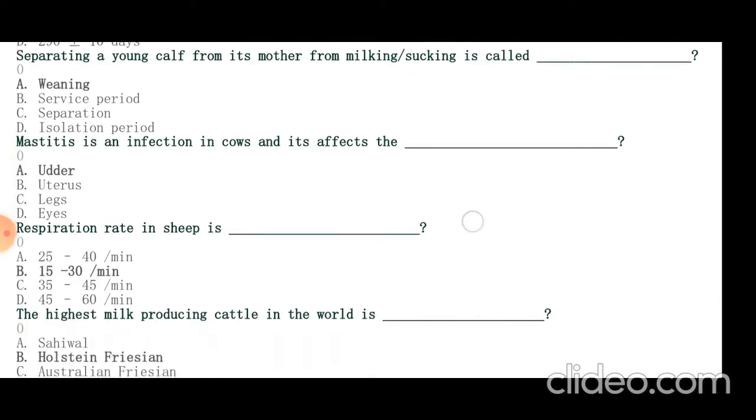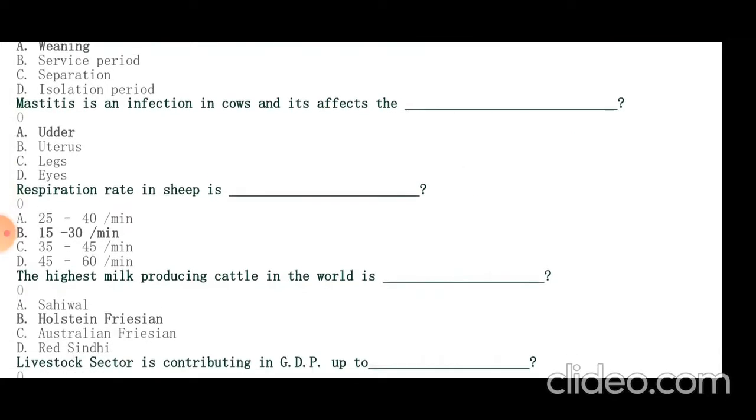Respiration rate of sheep is 15 to 30 per minute. The highest milk producing cattle in the world is Holstein-Friesian.